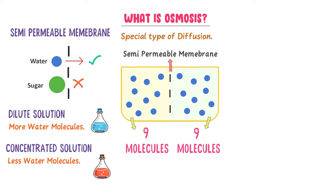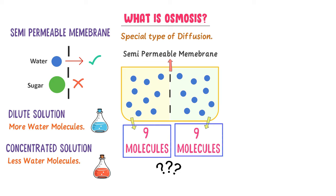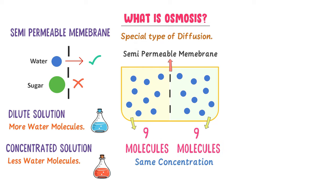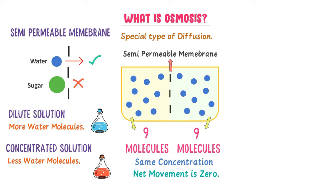If I ask about the net movement of water in Case 1, the answer is simple. Both parts have the same number of water molecules, so they have the same concentration. Therefore, the net movement of water will be zero — water will not move from one part to the other.